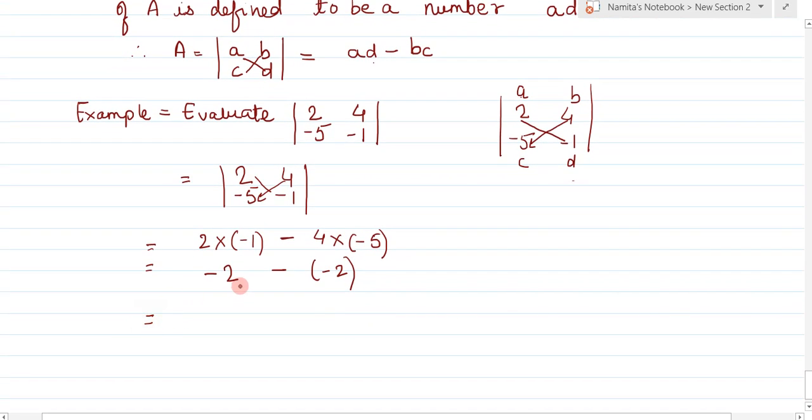This equals -2 minus -20. Since minus times minus equals plus, we have -2 plus 20, which equals 18. Therefore, the determinant is 18.